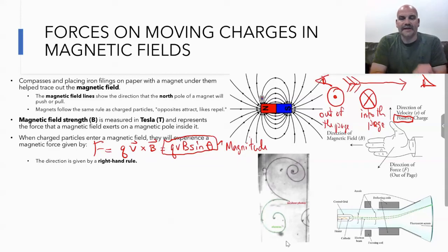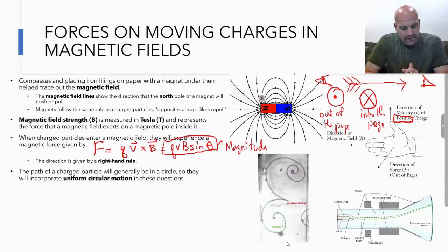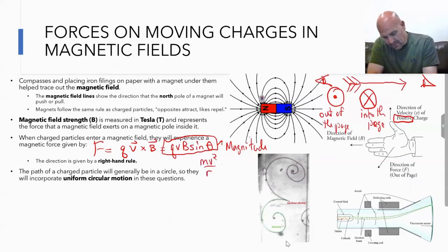The path of a charged particle in a uniform magnetic field will generally be a circle. When they enter into a magnetic field, the force is perpendicular to where that happens, so they'll relate it back to circular motion. They'll say mv squared over r equals qvb, as long as they're at 90 degrees to each other for the v and the B. We don't have to worry about the sine because sine of 90 equals one.